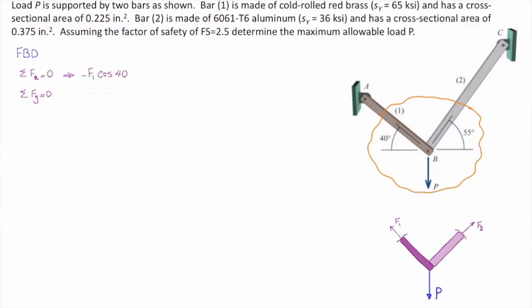That goes to the left. I assume the left side is negative. And F2 times cosine of 55, that goes to the right, and I assume that is positive. And that should be equal to zero.